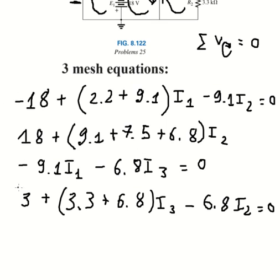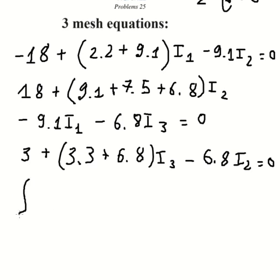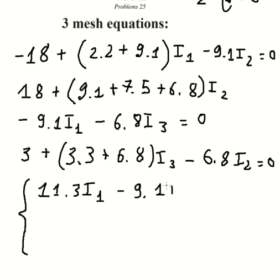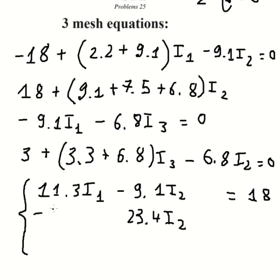Now we have three mesh equations and we need to arrange the system of equations. For mesh one: 2.2 plus 9.1 gives 11.3 times I1. We move negative 18 to the right side. For mesh two the coefficient is 23.4 times I2, minus 9.1 times I1, minus 6.8 times I3.